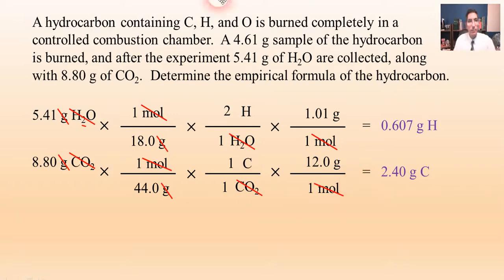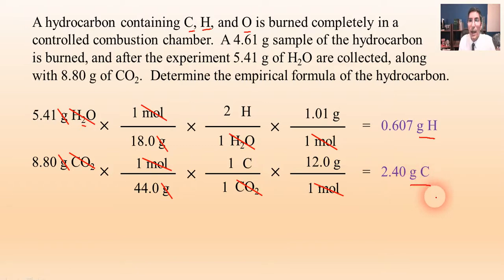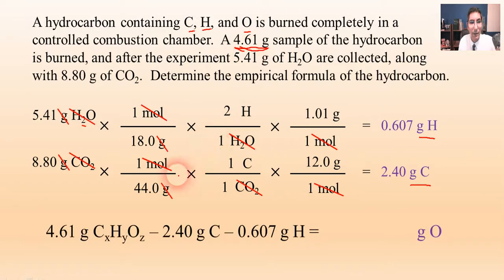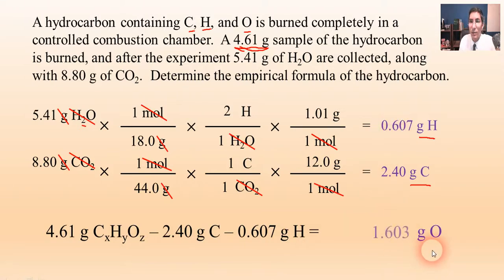The hydrocarbon contains carbon, hydrogen, and oxygen. We've figured out the grams of hydrogen and the grams of carbon. To determine the grams of oxygen, it's actually simpler — just subtraction. The total mass of the hydrocarbon is 4.61 grams, so we subtract the grams of carbon (2.40) and the grams of hydrogen (0.607) from the total, giving us 1.603 grams of oxygen.